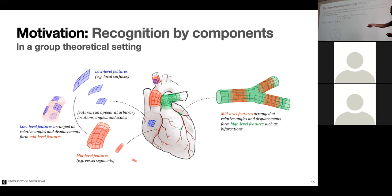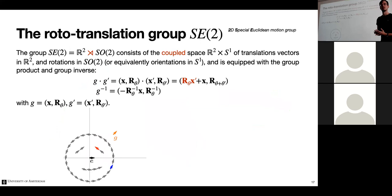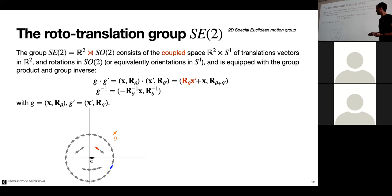Now let's relate this to the recognition-by-components concept. In a deep learning setting, it's about learning representations that describe objects. We can think of group transformations as describing poses of an object — for example, a face described by line segments defining its contour. These can be represented as group elements: a position and orientation in 2D, depicted as an arrow.